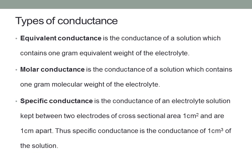We have different types of conductance: equivalent conductance, molar conductance, and specific conductance. Equivalent conductance is the conductance of a solution which contains 1 gram equivalent weight of the electrolyte. Molar conductance is the conductance of the solution which contains 1 gram molecular weight of the electrolyte. Specific conductance is the conductance of an electrolytic solution kept between 2 electrodes of cross-sectional area 1 cm² placed 1 cm apart — that is, the conductance of 1 cm³ of the solution.